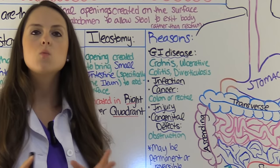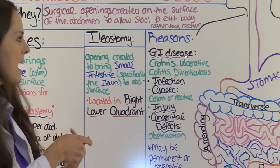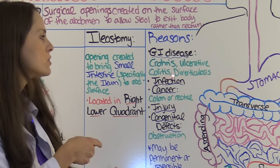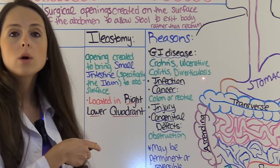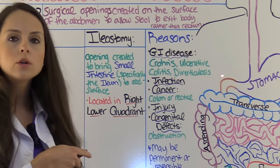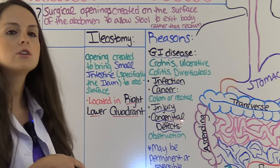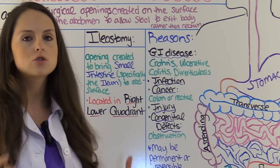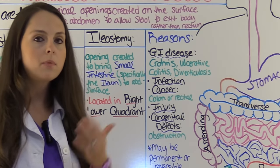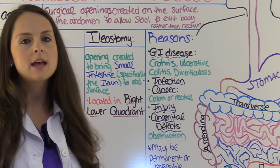What are some reasons why a person may have an ostomy? They may have GI disease like Crohn's, ulcerative colitis, or diverticulosis, or an infection or cancer like colon or rectal cancer, or maybe an injury or congenital defects like an obstruction. A colostomy or ileostomy may be permanent or reversible depending on what's going on with the patient and their treatment plan.